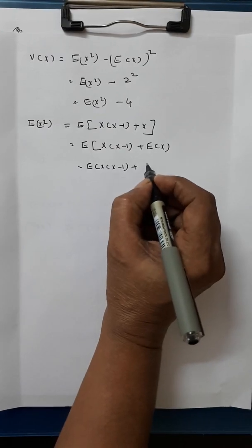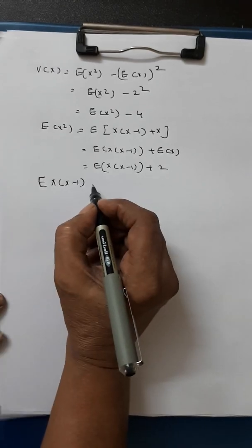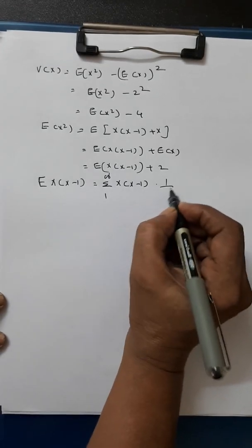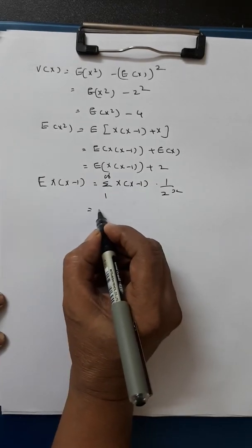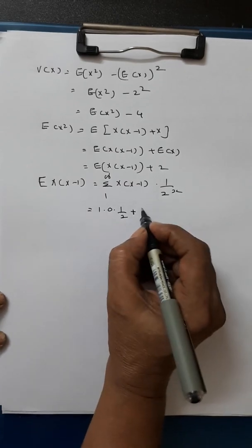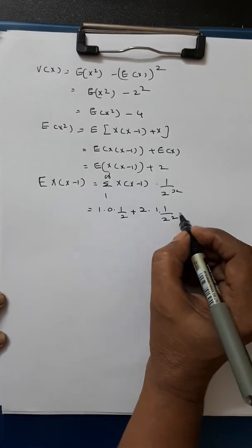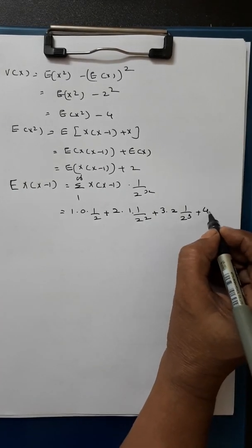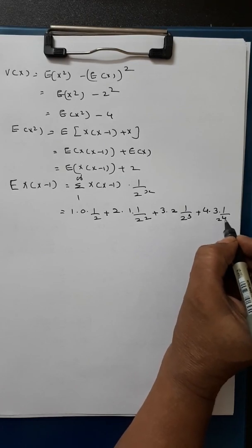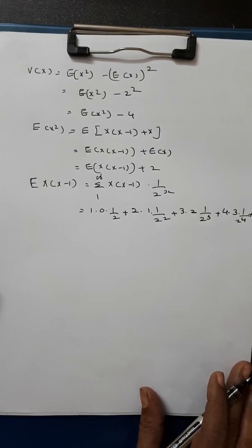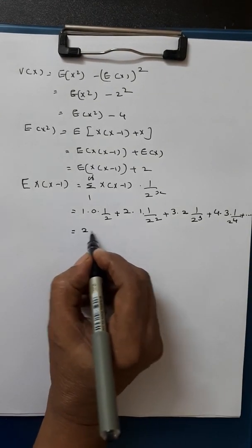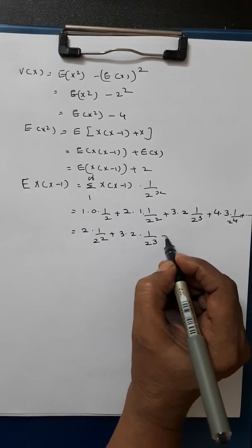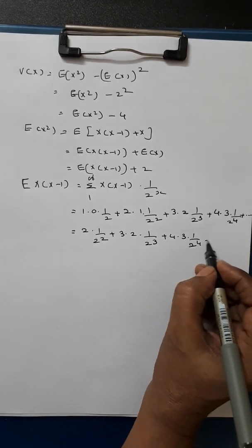E of x(x minus 1) equals summation from 1 to infinity of x(x minus 1) times (1/2) raised to x. Expanding the terms: when x equals 2, we get 2 times 1 times 1/4; when x equals 3, we get 3 times 2 times 1/8; when x equals 4, we get 4 times 3 times 1/16; and so on. Taking 2 times (1/2) squared outside, we get a series involving 1 plus 3 times (1/2) plus 6 times (1/2) squared plus etc.